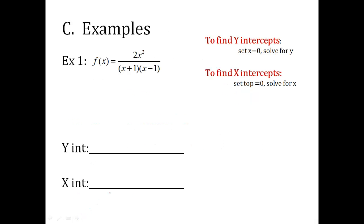All right, so here's some examples. We're going to find both kinds, so I put a reminder up here. f of x equals 2x squared over x plus 1 times x minus 1. It's already factored for me, which is nice.